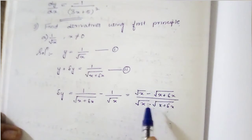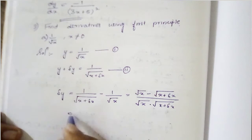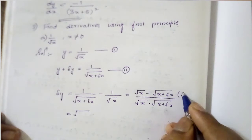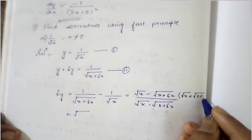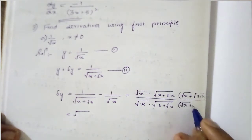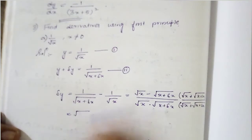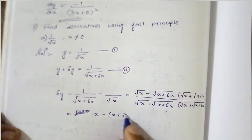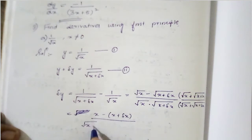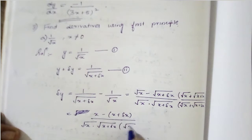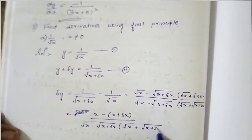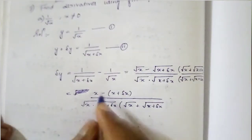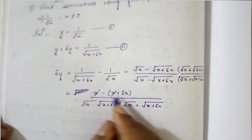We still have not got del x to cancel, so we need to rationalize this fraction. After rationalizing, multiplying by root x plus root(x + del x) over root x plus root(x + del x), the numerator becomes x minus (x + del x), and the denominator becomes root x into root(x + del x) into root x plus root(x + del x). We can cancel x and x from the numerator.